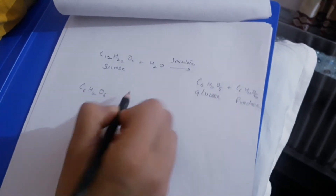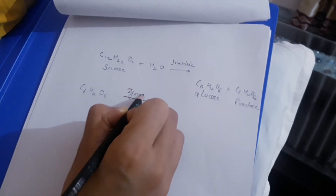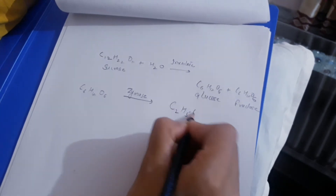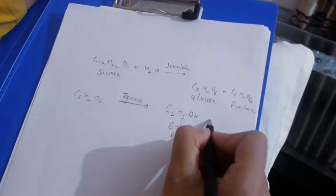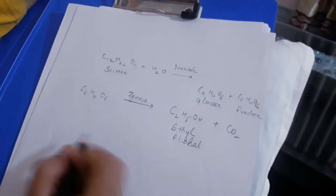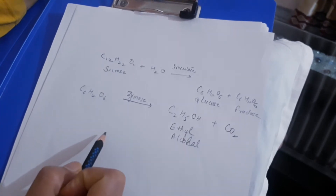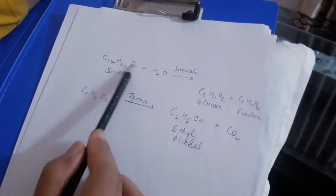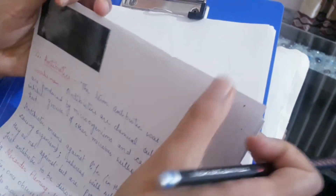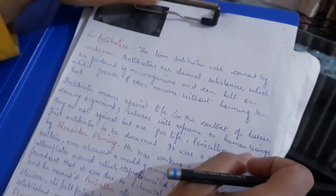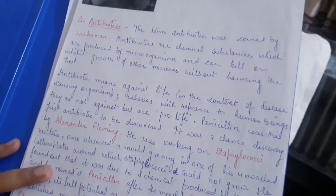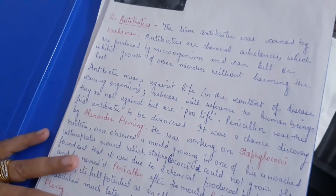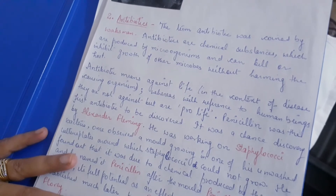Then another enzyme of yeast — zymase — acts on the glucose or fructose (C₆H₁₂O₆), and the product formed is ethyl alcohol (C₂H₅OH) plus carbon dioxide. When CO₂ is released, it tells us that fermentation is complete. So yeast enzymes convert sucrose into alcohol. This is the fermentation process done in a fermenter under controlled conditions for higher productivity.